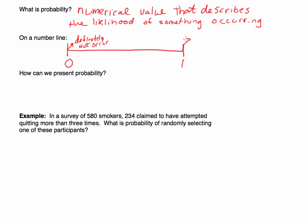On the other end, this will definitely occur. If there's a probability of 1, it is certain. So 0 means impossible — it's definitely not going to occur — and 1 means certain. Everything else in between is a number between 0 and 1. If we split it right in half, a probability of 0.5 is the same as a 50% chance. And 0.75 probability is the same as a 75% chance.